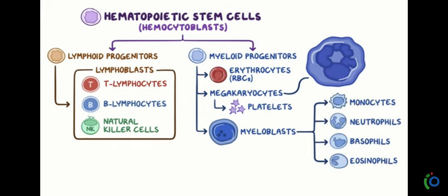B lymphocytes mature in the bone marrow. They develop into plasma cells, which further form antibodies. These antibodies are responsible for binding with antigens. An antigen is a foreign particle, and these foreign particles — the antigens — are destroyed by this process.